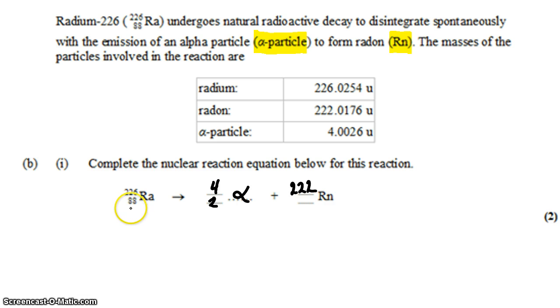Similarly, if we started with 88 protons and took out two of them to form the alpha particle, then there are only 86 protons for radon.